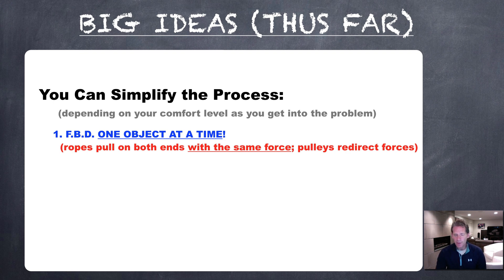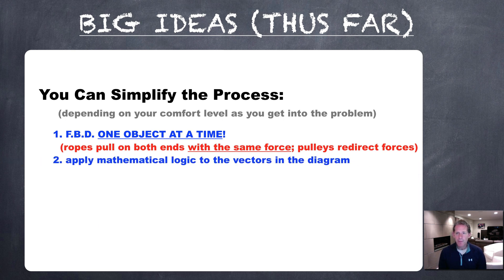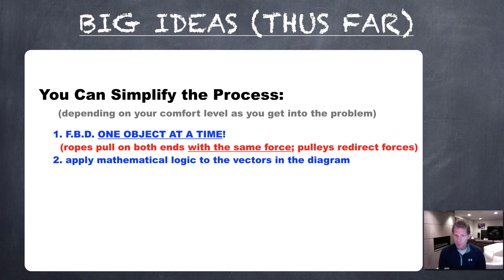So free body diagram is step one. Step two: apply mathematical logic to the vectors. If forces are in the same direction, add them. If they're in opposite directions, subtract them. This is the simplified process. In the problems we're going to model today, we're doing it intuitively, so we won't be doing a lot of mathematics. When you're working on your problem set or the more advanced part of your study guide, you might find it helpful to come back to the screencast and look at some of those examples again.